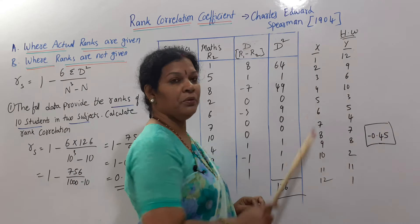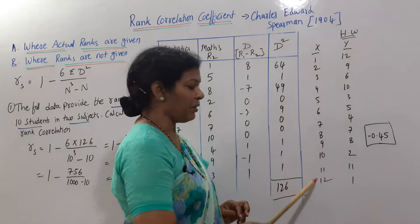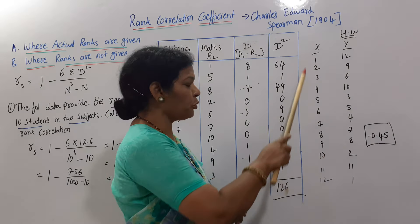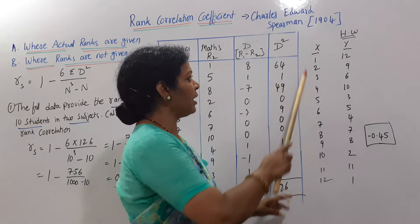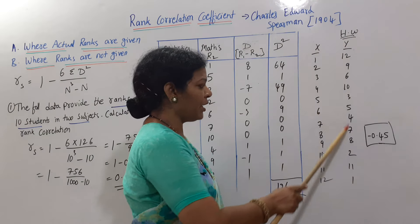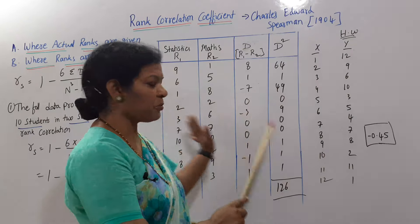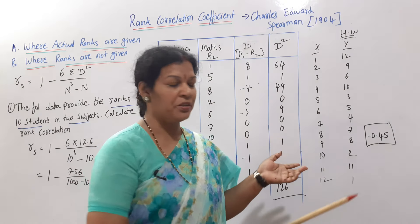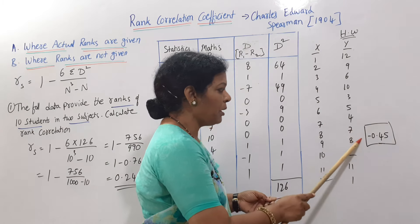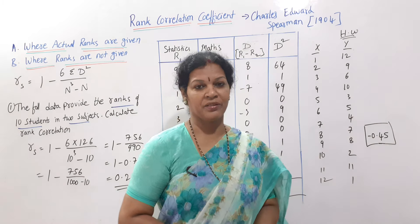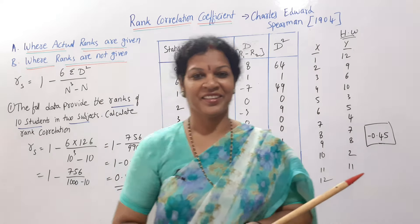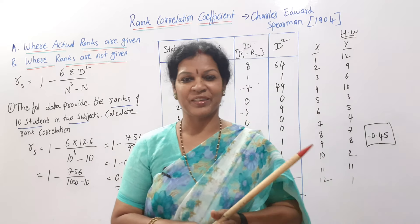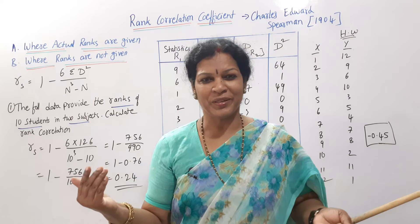And if you understood, here is a problem homework for you. Ranks are given. X ranks, total 12 members ranks are given. X, R1, and Y, R2 is given. Same like this problem only. Work it out. Calculate first D, then D square. Apply it in the formula. Your answer must be minus 0.45. How many of you are getting? Write it in the comment box. If you get the answer, practice it. Because you understood.